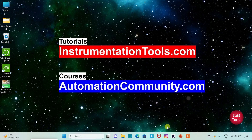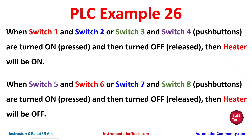Hello friends, welcome to Automation Community. Today in this video we are going to discuss an example in which we will use push buttons to control the heater. Example 26: when switch 1 and switch 2, or switch 3 and switch 4 are turned on and then turned off, the heater will be on. When switch 5 and switch 6, or switch 7 and switch 8 are turned on and then turned off, the heater will be off.